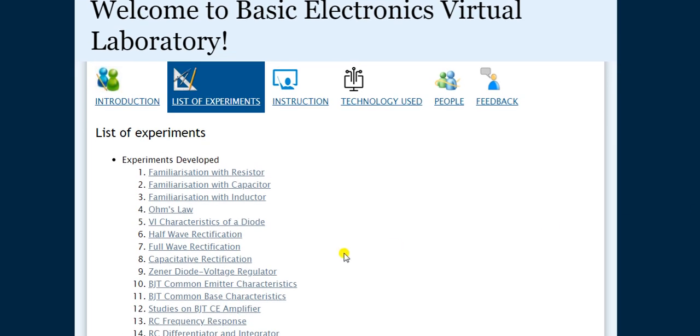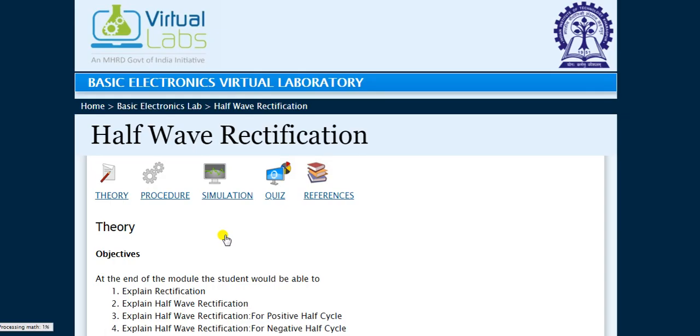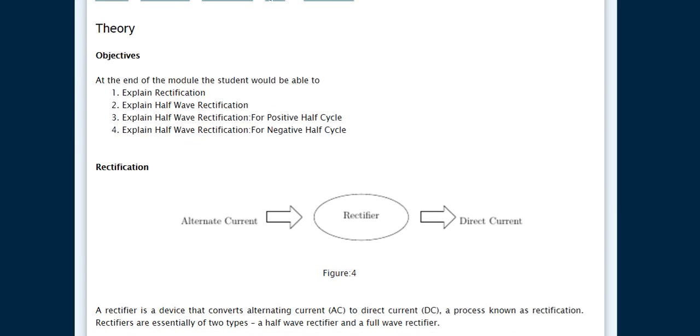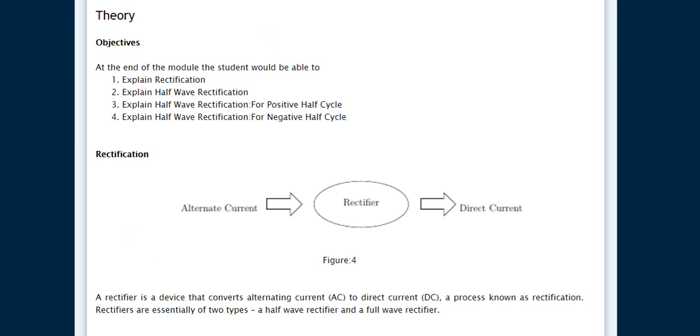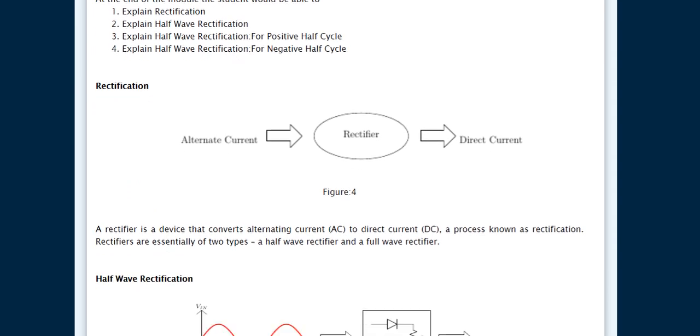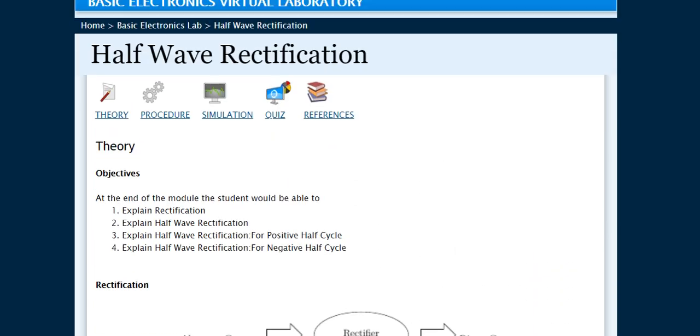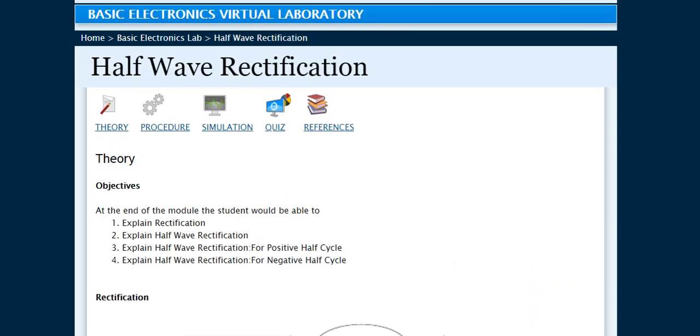Just click on half wave rectification. There is a theory portion, procedure, and simulation. As we all know, a half wave rectifier is a circuit that converts alternating current into direct current, and this process is known as rectification. There are two types of rectifier: first is half wave rectifier and second is full wave rectifier. We will see both types in the simulation part.